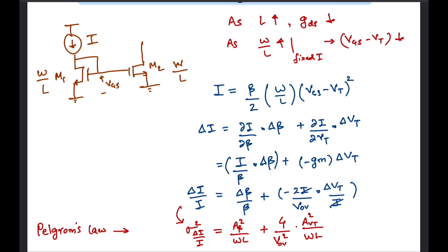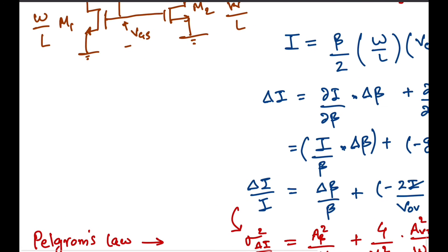By the way, a salient point is that the standard deviation of delta beta over beta is proportional to 1 by root WL, whereas the standard deviation of only delta VT, not delta VT over VT, is proportional to 1 by root WL.